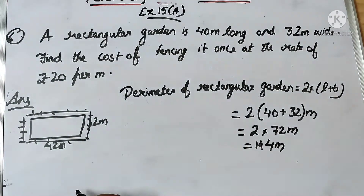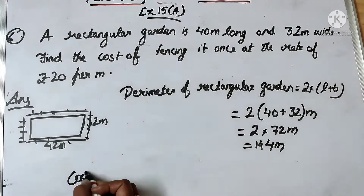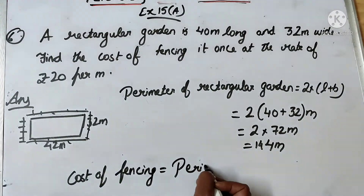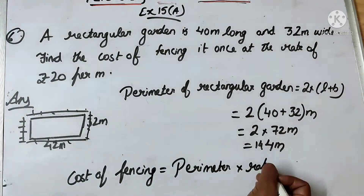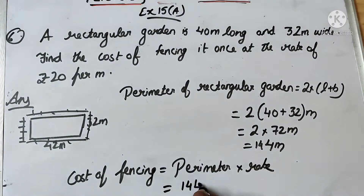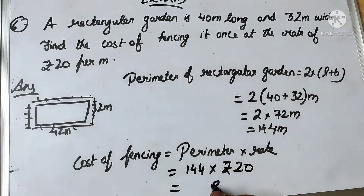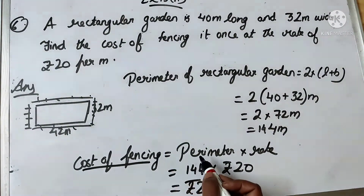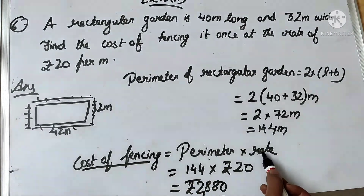Now find the cost of fencing at the rate of rupees 20 per meter. Cost of fencing = Perimeter into Rate = 144 into 20 = rupees 2,880. Similarly, if the cost of fencing and the rate are given, we can find the perimeter by dividing cost of fencing by rate.